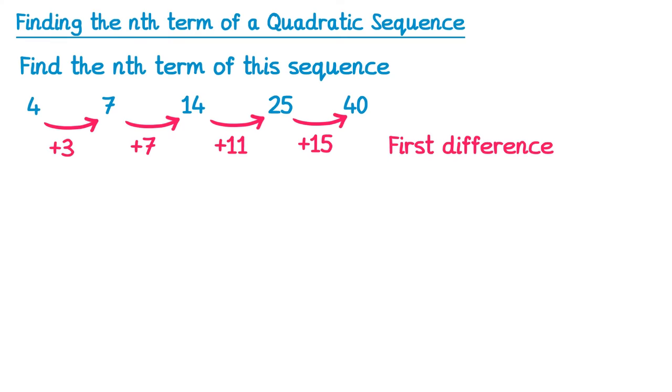So we'll check the second differences. 3 to 7 is add 4, 7 to 11 is add 4, 11 to 15 is add 4. This is the second difference, and it is constant, so it must be a quadratic sequence.